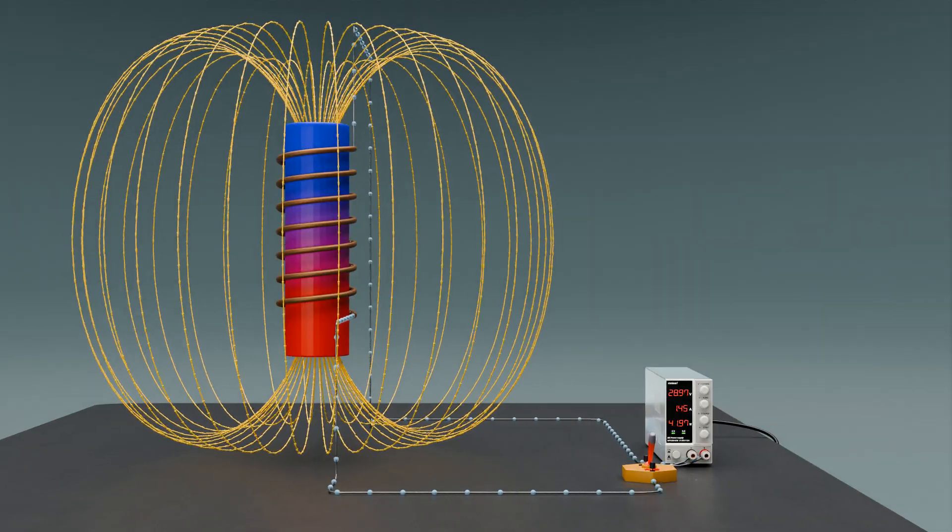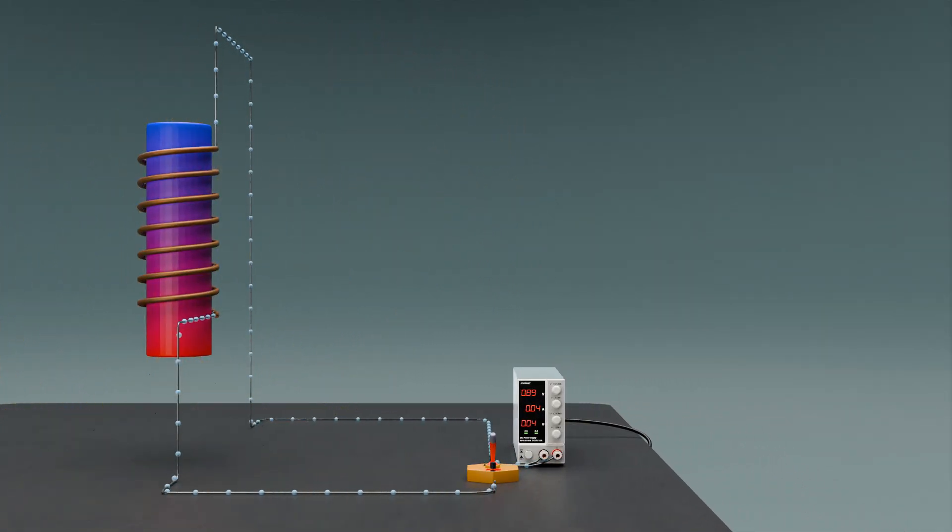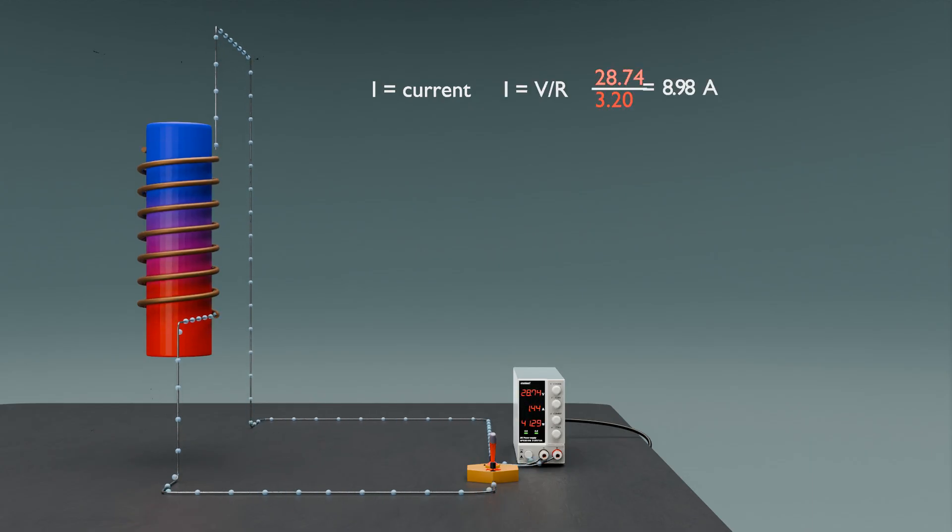We see the concept of magnetomotive force, or MMF, in the coil and the current I flowing through it. Mathematically, this is expressed as MMF equals NI.